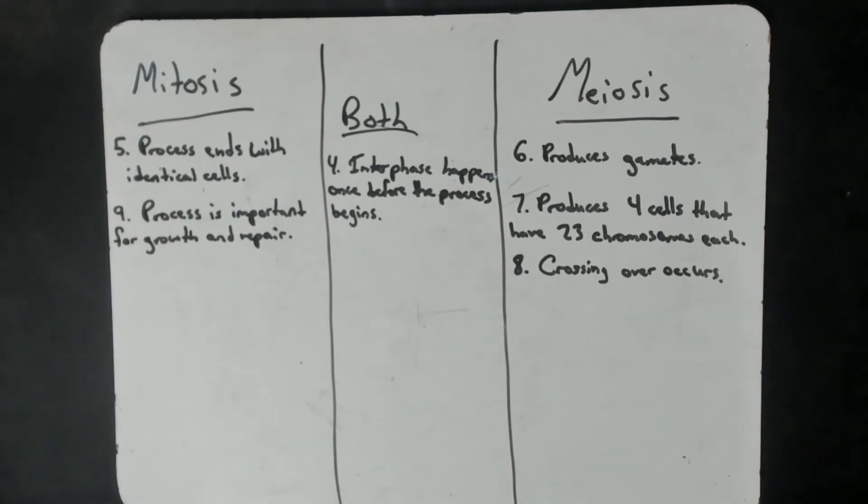And number nine, the process is important for growth and repair. That's mitosis. Mitosis is the one that's going to grow the cells that you need and repair the cells that work for your body in general. Meiosis is more about your genetics, and mitosis is more about your growth and basic functions.